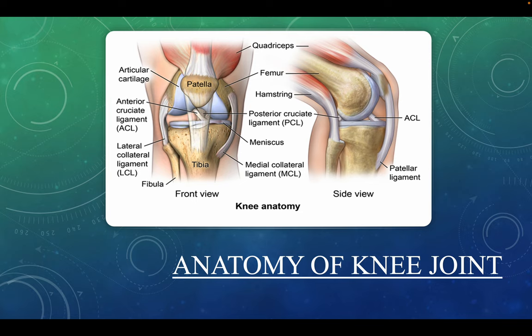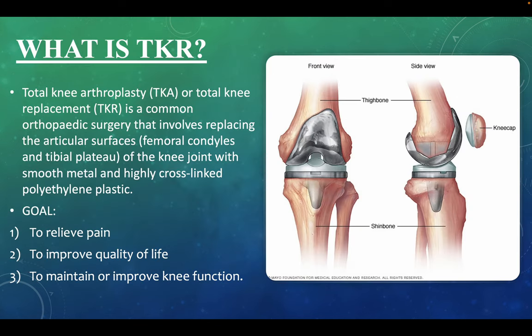The long thigh muscles of the knee joint give the knee strength. All remaining surfaces of the knee are covered by a thin lining called the synovial membrane, which releases fluid and lubricates the cartilage, thereby reducing friction to nearly zero in a healthy knee.